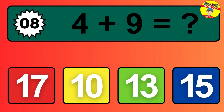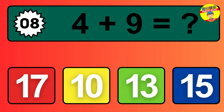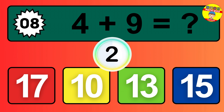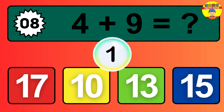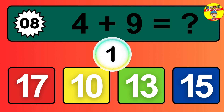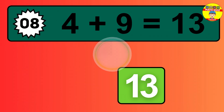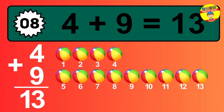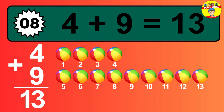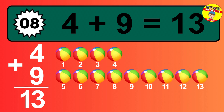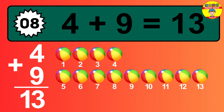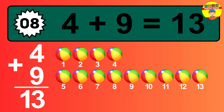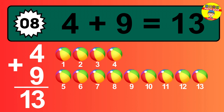Question 8. 4 plus 9 equals what? Let's count it. 1, 2, 3, 4, 5, 6, 7, 8, 9, 10, 11, 12, 13. The answer is 4 plus 9 is 13.